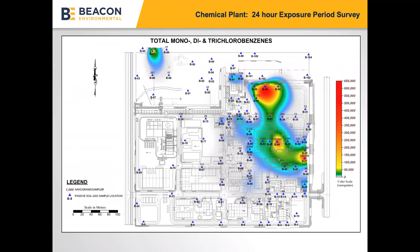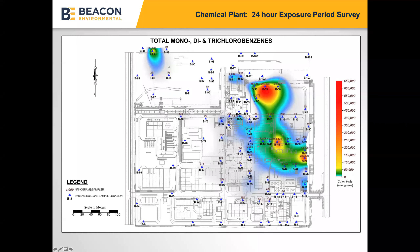A project in Brazil assessed mono-, di-, and trichlorobenzene with just a 24-hour exposure period. When concentrations in the source area are known to be high and you're looking for a quick assessment of where impacts are, you can do a 24-hour passive soil gas sampling event — deploying one day and collecting the next — and quickly identify source areas while still getting a steady-state soil gas sample that is not going to be biased.